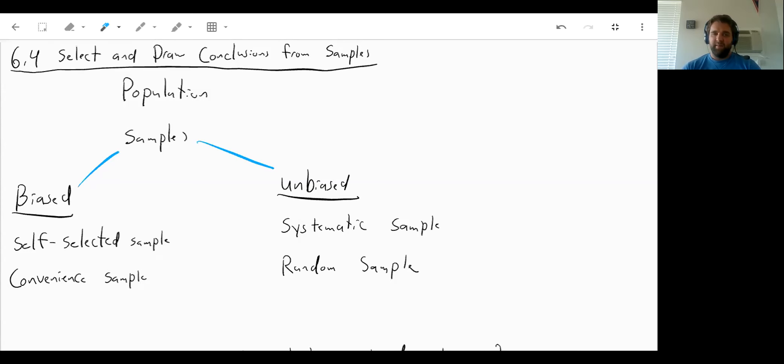So a couple examples of a biased sample. First is a self-selected sample. You chose yourself to be part of this sample. So if you go to Subway and you get a survey on the bottom of your receipt and you go and take that survey, this is a self-selected sample. Or if you get a letter in the mail and you go and fill out a survey and send it back in, you are therefore choosing to be a participant in this.